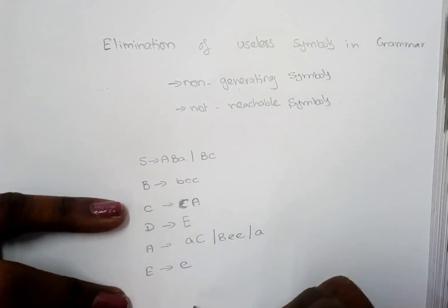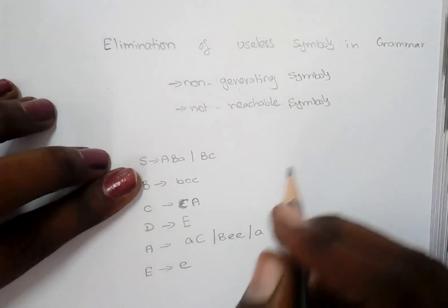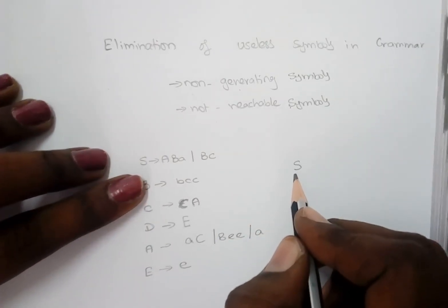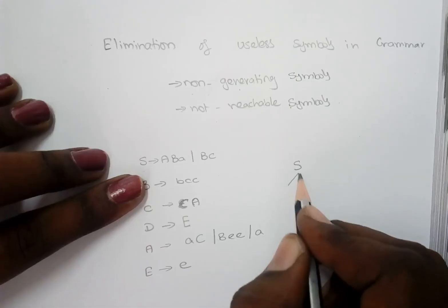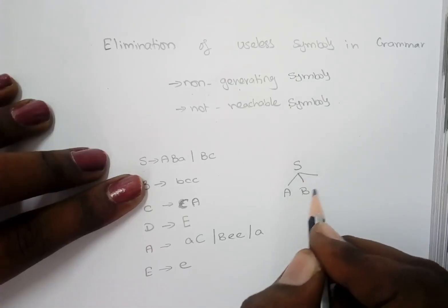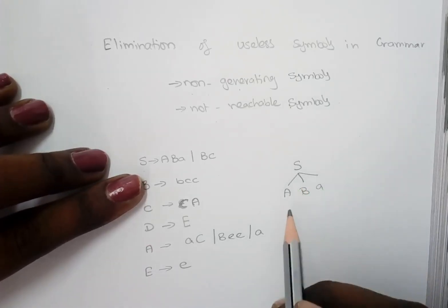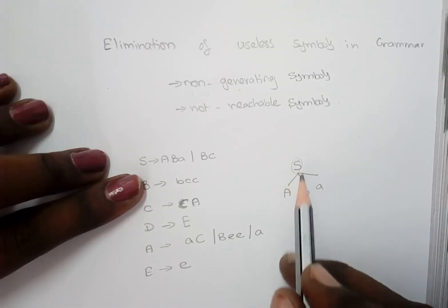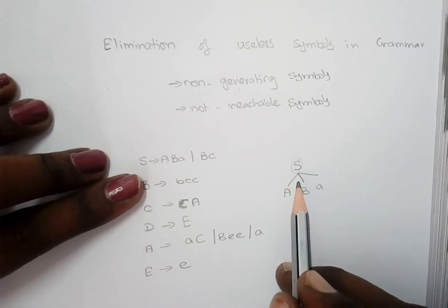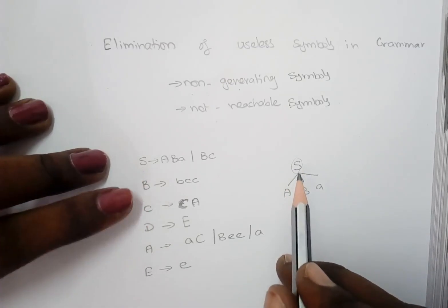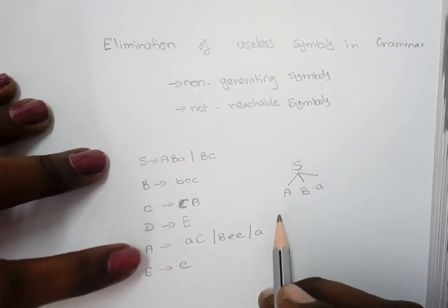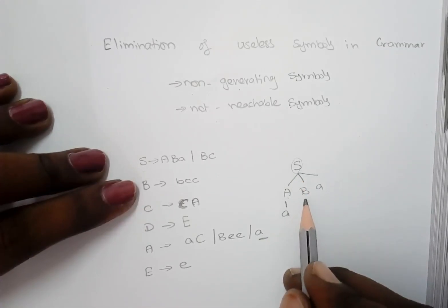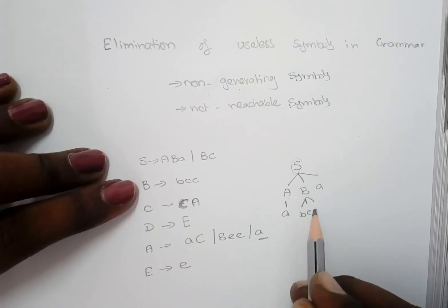For example, consider the grammar given here. When you consider this production, variable S has a production with A, B, A. On any one substitution for this A and B, if the variable S derives to some set of terminal symbols, then that is a generating symbol. For example, this A can be substituted with small 'a' and this B can be substituted with BCC.